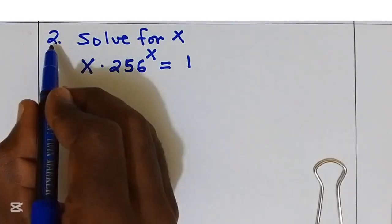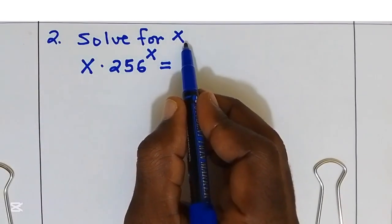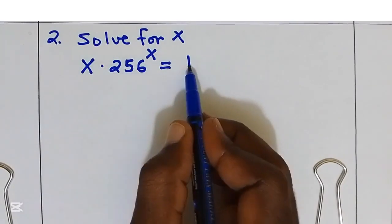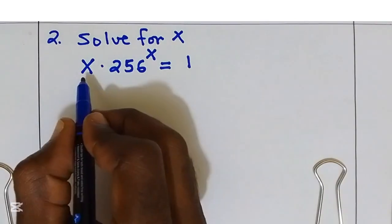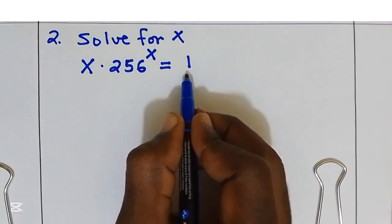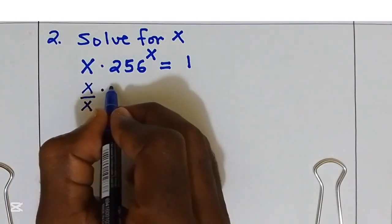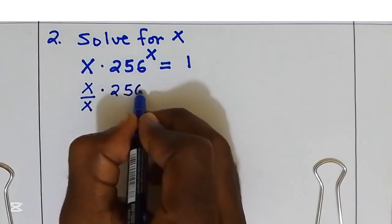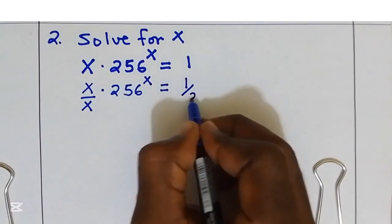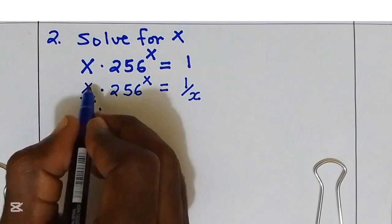Let's do question number 2. We are supposed to solve for x. They have given to us x multiply by 256 power x is equal to 1. First I'm going to divide by x on both sides. x over x multiply by 256 power x. This is equal to 1 over x.